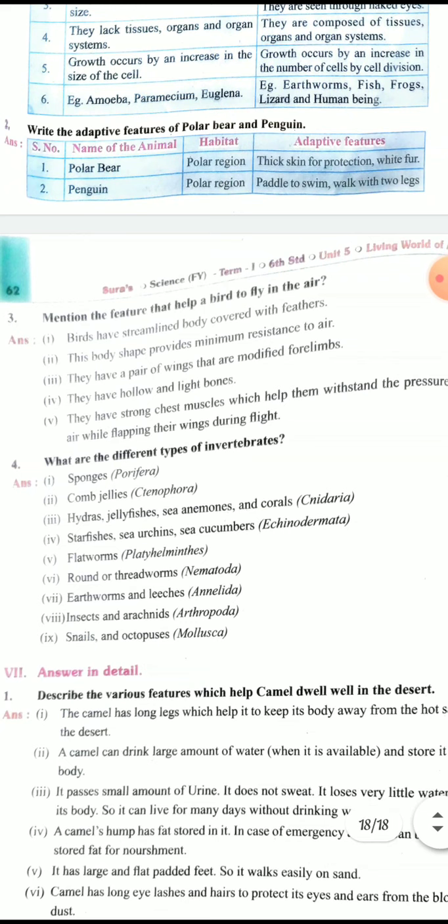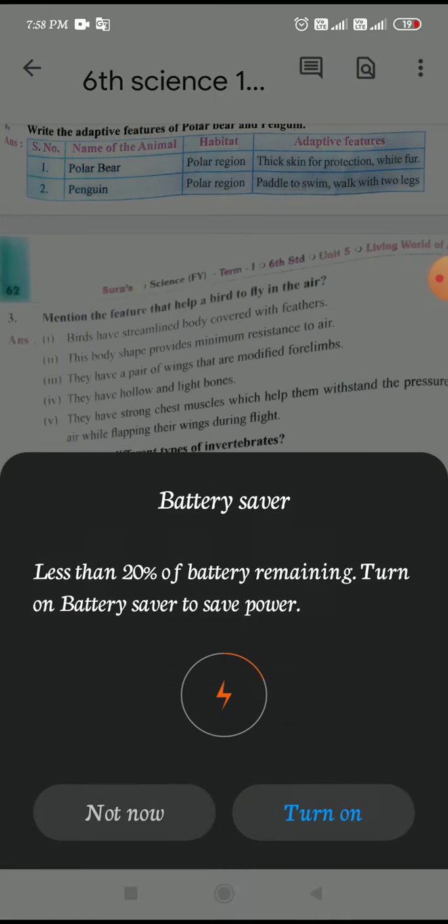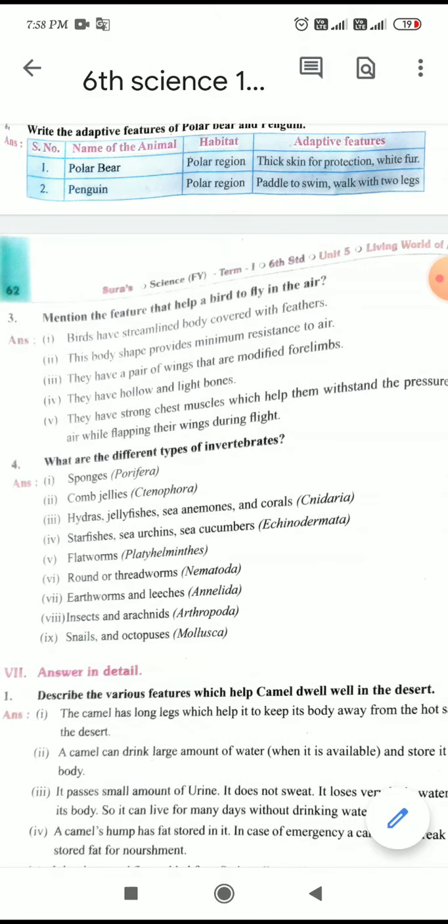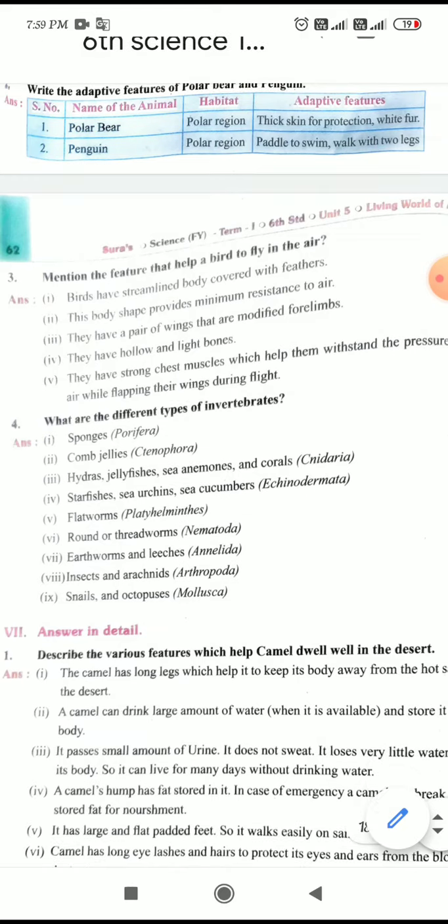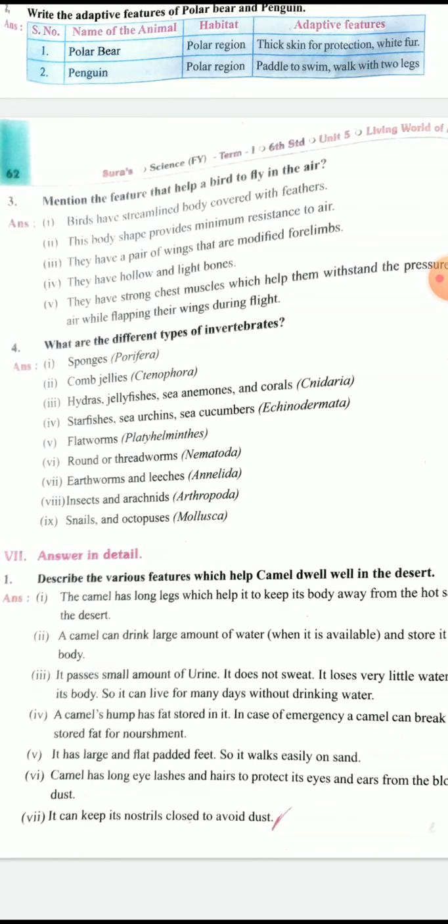Second question: Write the adaptive features of polar bear and penguin. Polar bear habitat is polar region. Adaptive features are thick skin for protection, white fur. Penguin habitat polar region. Adaptive features are paddle to swim, walk with two legs.